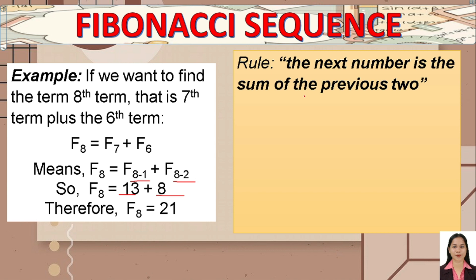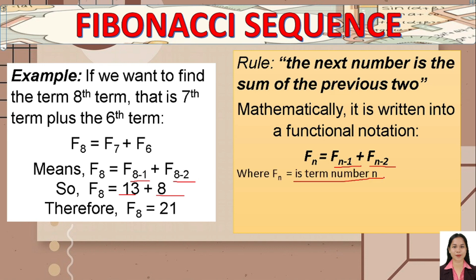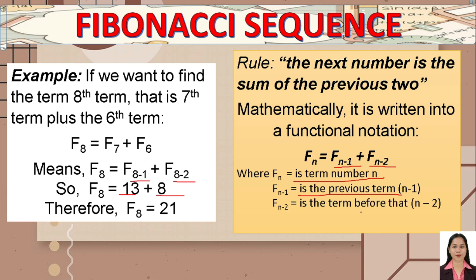This kind of rule is called a recurrence relation. Mathematically, it is written as: f-sub-n equals f-sub-(n minus 1) plus f-sub-(n minus 2), where f-sub-n is the nth term, f-sub-(n minus 1) is the previous term, and f-sub-(n minus 2) is the term before the previous term.